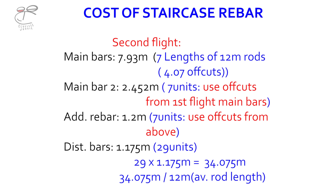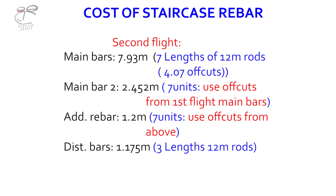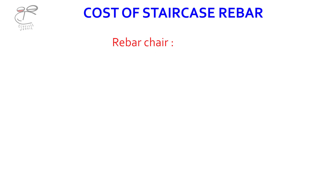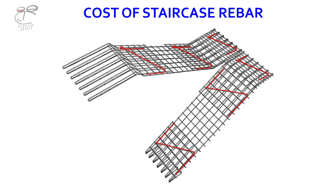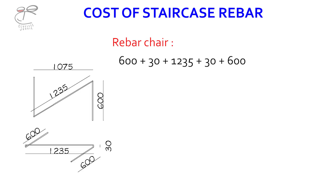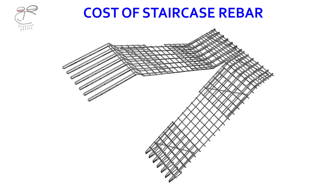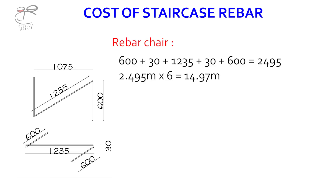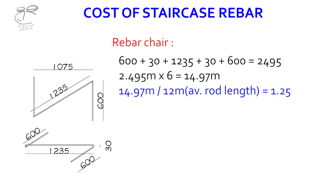Then we move on to the rebar chairs. Adding the values — these details are gotten from the bar bending schedule — gives 2.495 meters for each chair. There are six of them, giving 14.97 meters. Dividing 14.97 by the 12-meter average rod length gives roughly two lengths of iron.